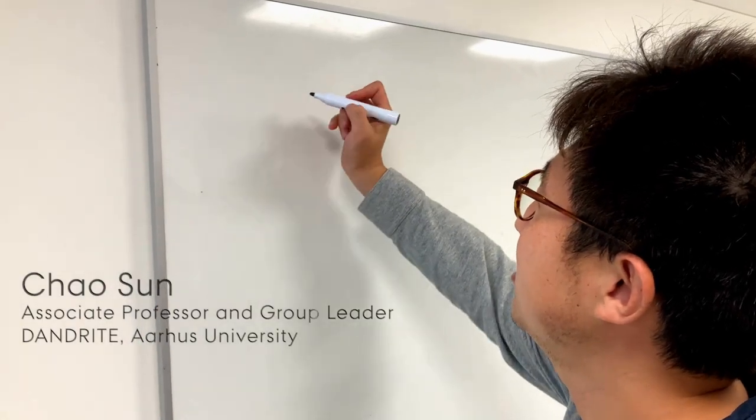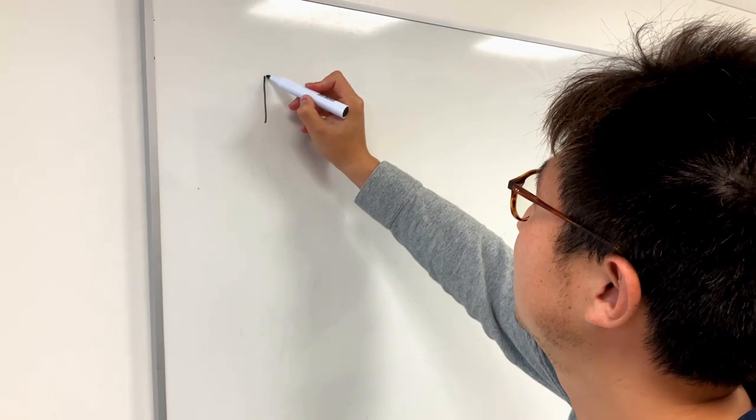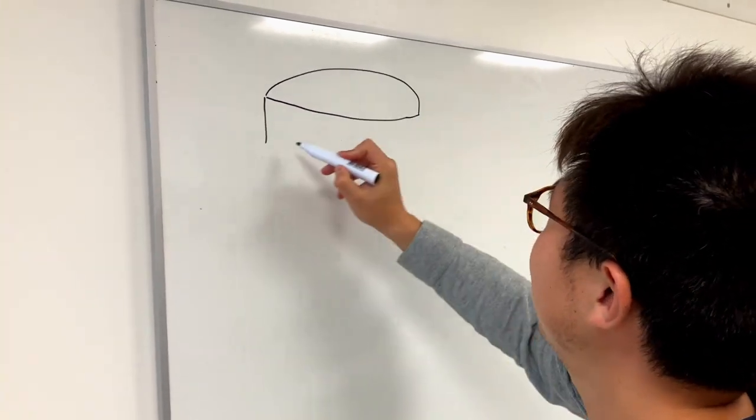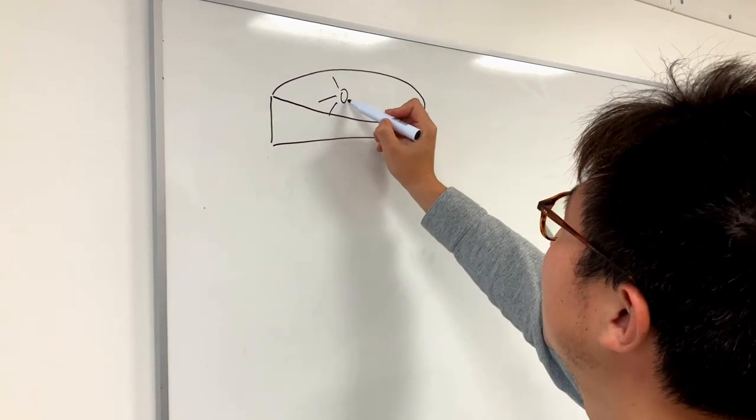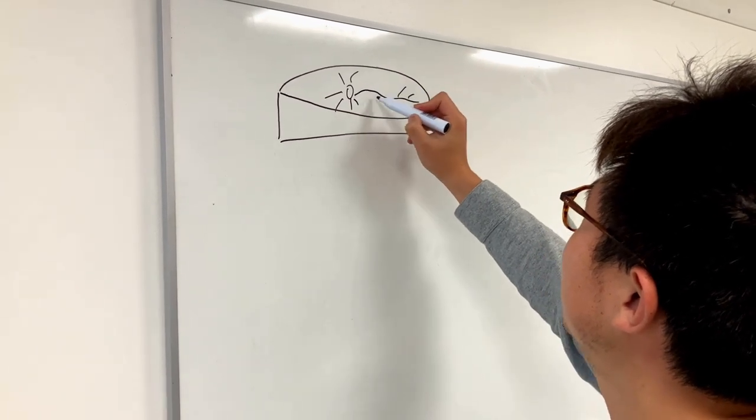In our lab, we are very interested in the molecular biology of neurons. For example, in our model system, we grow neurons dissociated from the brain of a rat on a dish.